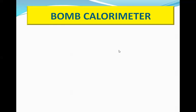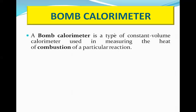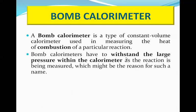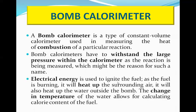Now we will discuss the instrument used to calculate the calorific value of solid and liquid fuels — the bomb calorimeter. It is a type of constant volume calorimeter used to measure the heat of combustion of a particular reaction. The bomb calorimeter has to withstand large pressure within the calorimeter; when a substance is burned inside the stainless steel vessel, a very high pressure is produced, which is why the word 'bomb' is used. Electrical energy is used to ignite the fuel. As the fuel burns, it heats up the surrounding air and the water outside the bomb, and the change in temperature of the water allows for calculating the calorie content of the fuel.